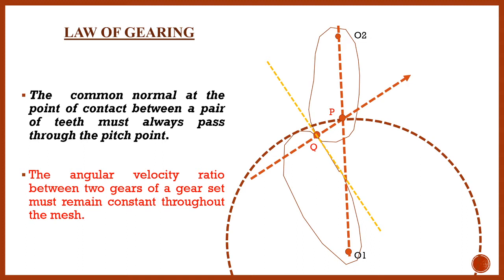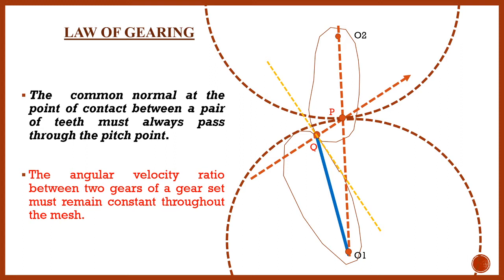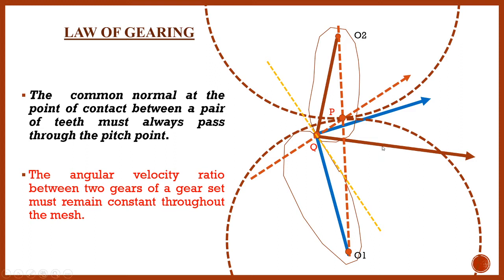Through this pitch point I have drawn one circle whose radius is equal to O1P, which is the pitch circle of gear 1. I have drawn the second circle whose radius is O2P, which is the pitch circle of gear 2. Next, I will join O1Q — that Q is the point of contact — and through that point I have drawn one line perpendicular to O1Q, which is the velocity of point Q on gear 1. Again, I join O2Q and draw the perpendicular line, which is the velocity of point Q on gear 2.